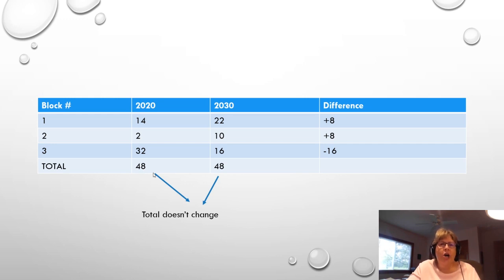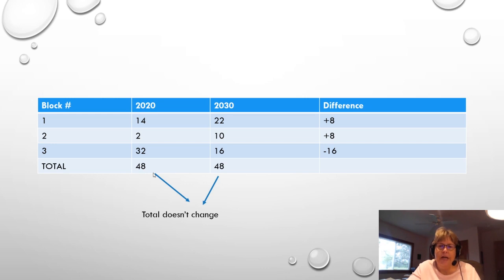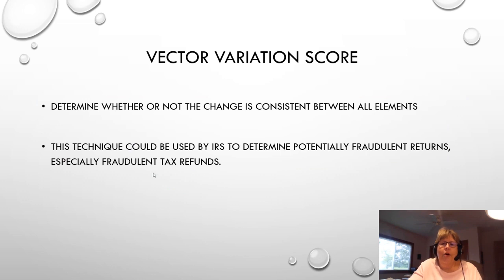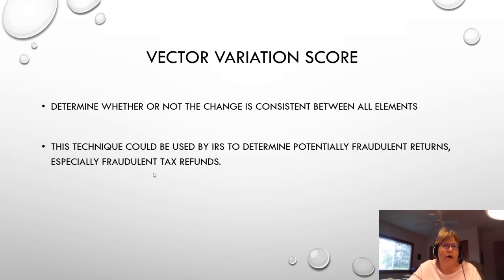But we want to know if there's a change on a unit-by-unit, or in this case block-by-block, level. Looking at the numbers, blocks one and two each show an increase of eight, while block three decreased by sixteen — so the changes are not consistent across all elements. This technique could be used to determine potentially fraudulent returns, especially tax refunds.